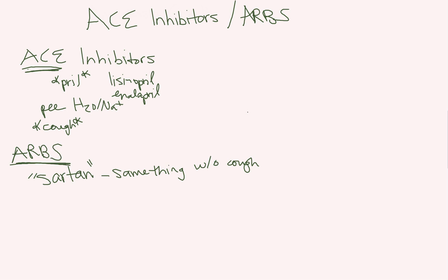So your angiotensin receptor blockers work a little bit later down the pathway, but they end up doing the same thing. They end up causing you to pee out your water and your sodium. They decrease your blood pressure, but they don't have that annoying cough because they work farther down this pathway. So your sartans are the ending for all your ARBs, like losartan, valsartan. And there you go. That's your memory tricks for ACEs and ARBs.